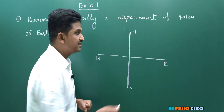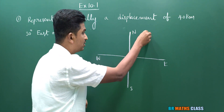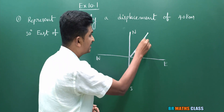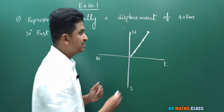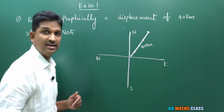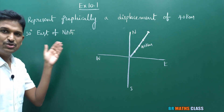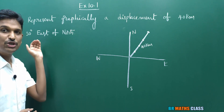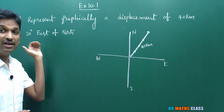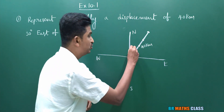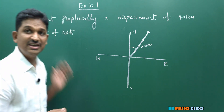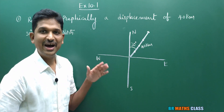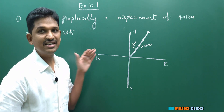First, the displacement of 40 kilometers — I mark that as 10, 20, 30, 40 — this represents the 40 km displacement. Now, for the direction: 30 degrees east of north. Many students confuse here. East of north means from north you need to move toward east — that is, north to east. This angle of 30 degrees is measured from north toward east. So I have represented the displacement of 40 kilometers at 30 degrees east of north.